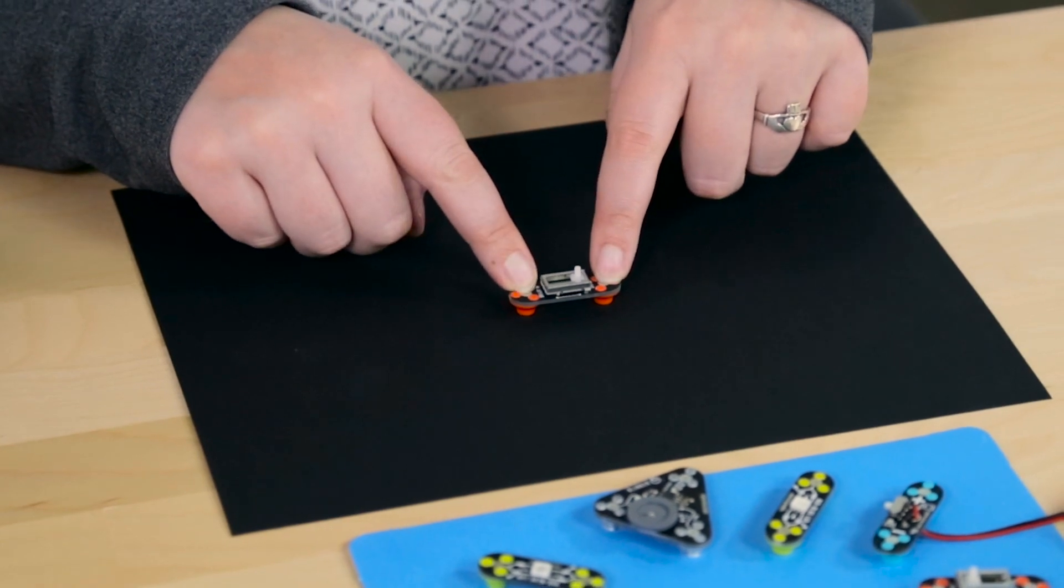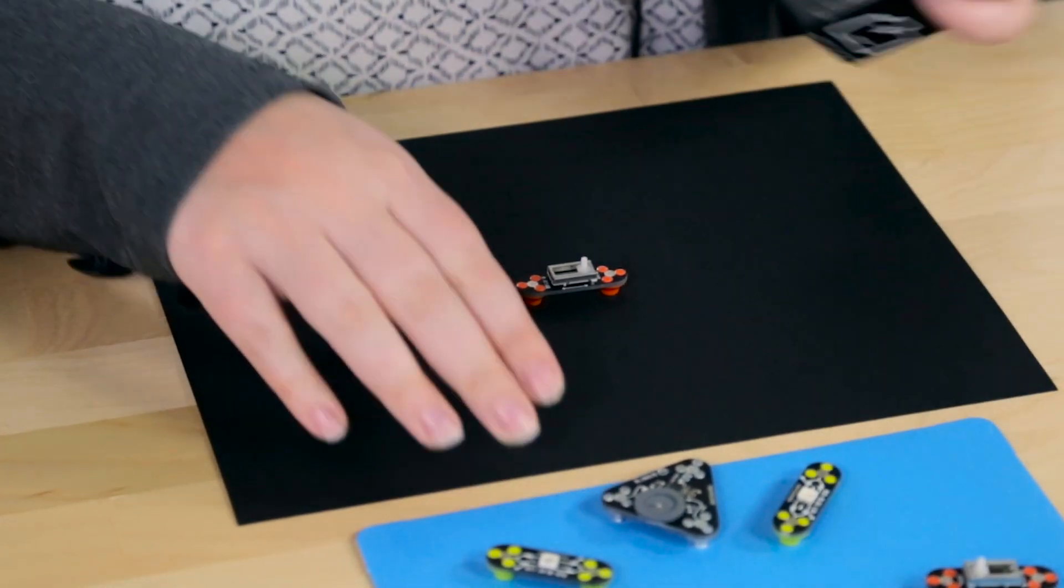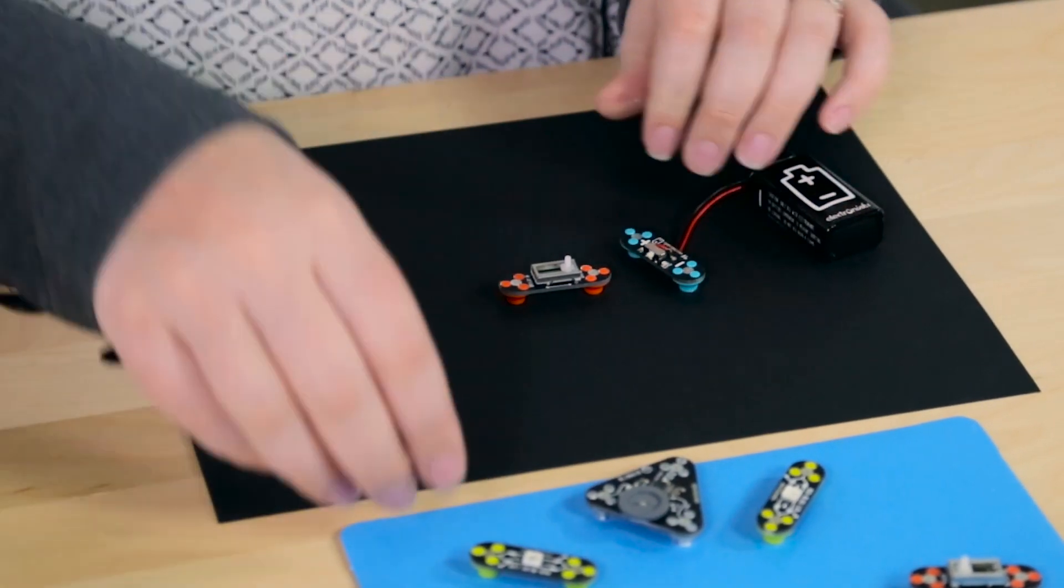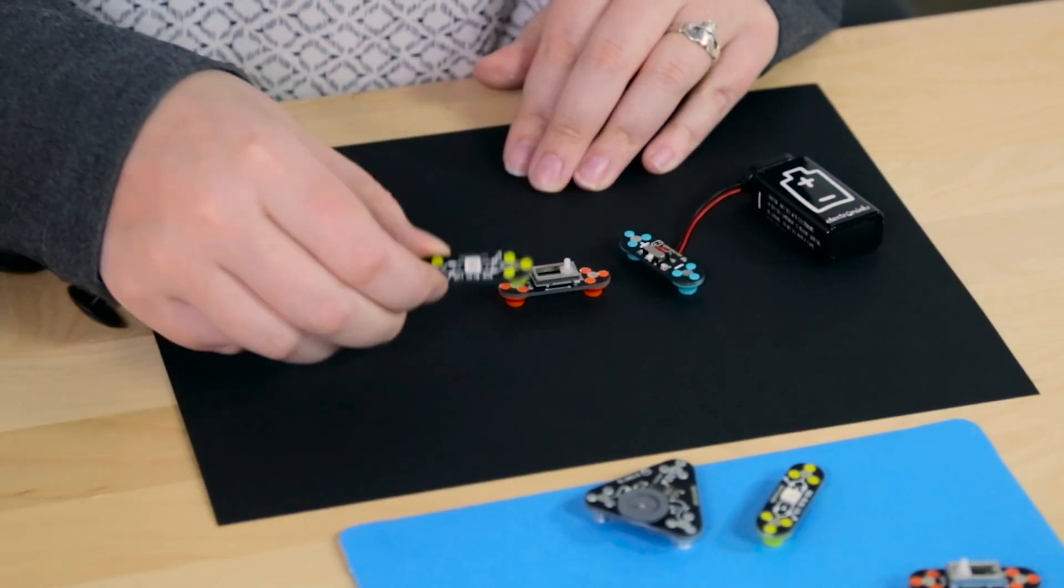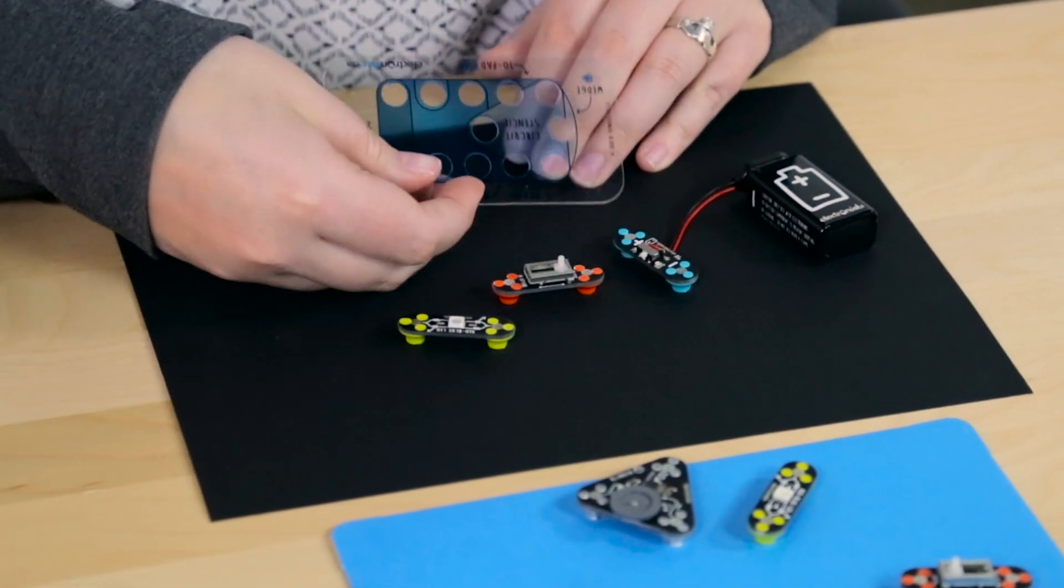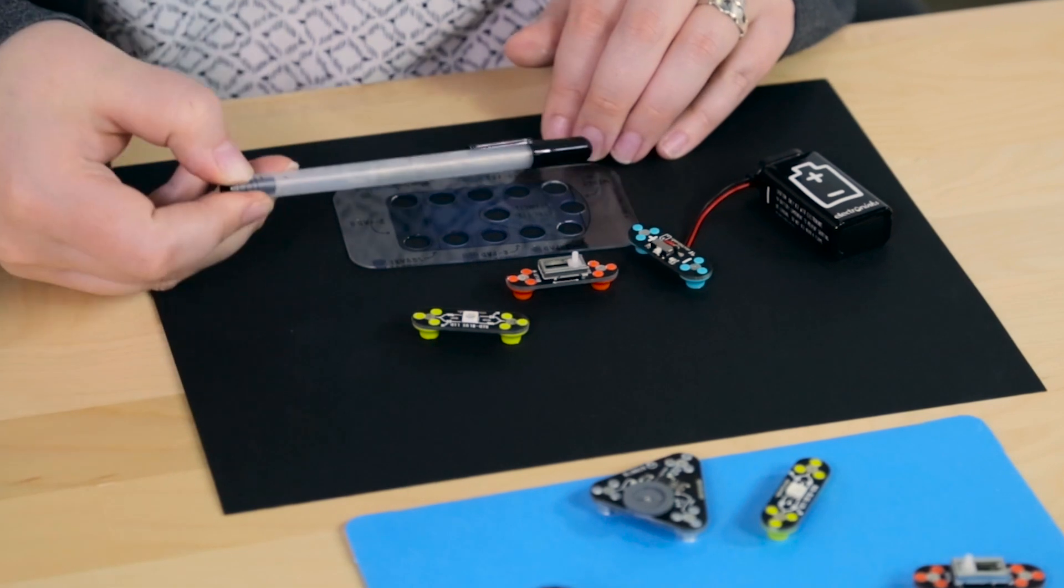Let's grab the things we're gonna need for this circuit. We're going to need a slider module, a battery module. We'll start with an LED module, get our stencil and our pen.